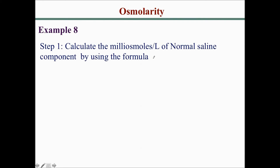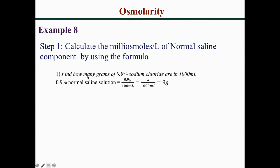First, we need to find how many grams of sodium chloride are in 1000 mL of 0.9% normal saline. We set up a proportion: 0.9% normal saline equals 0.9 grams per 100 mL equals X over 1000 mL. Solving gives 9 grams — meaning there are 9 grams of sodium chloride in 1000 mL.